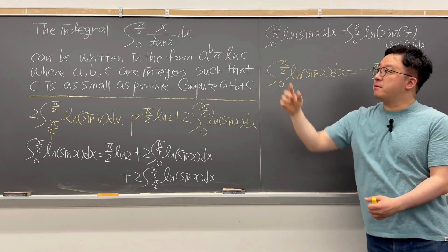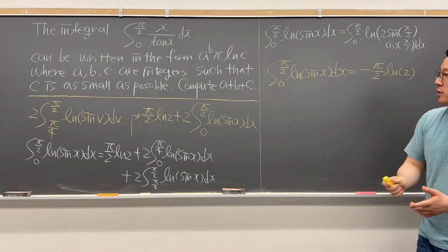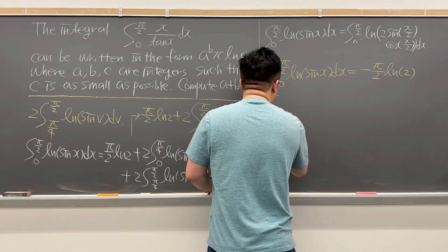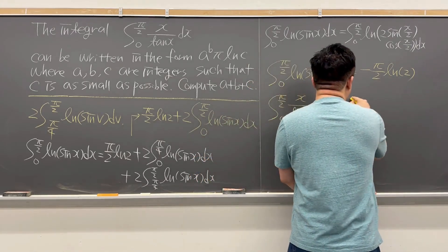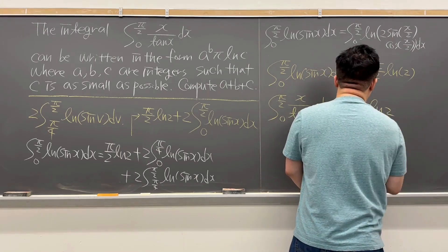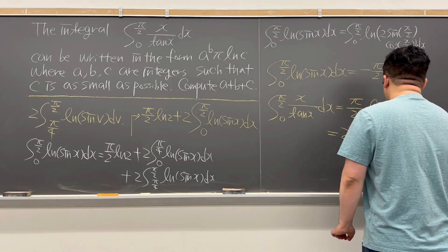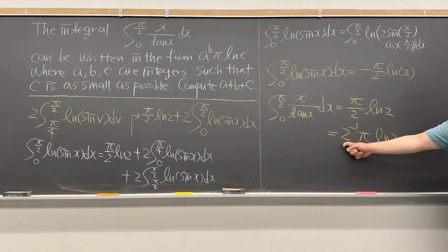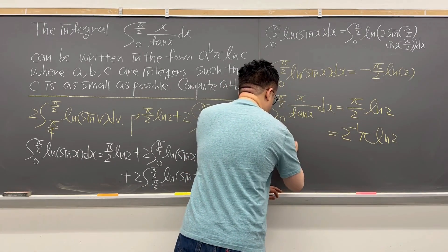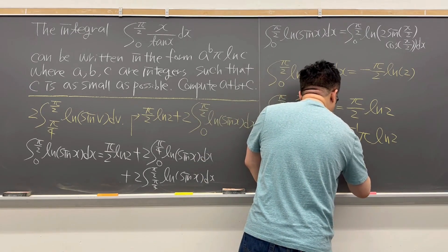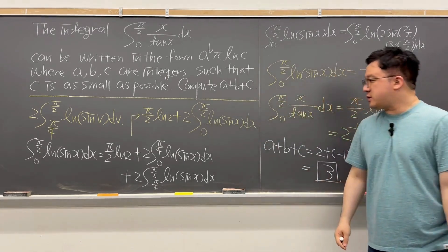Therefore, the original integral from 0 to π/2 of x/tan(x) dx equals positive π/2 · ln(2). We can write this as 2^(-1) · π · ln(2), so a = 2, b = -1, and c = 2. Thus a + b + c = 2 + (-1) + 2 = 3.